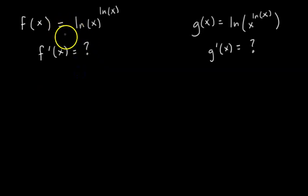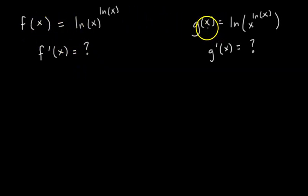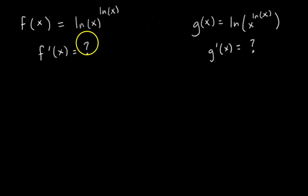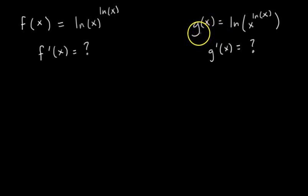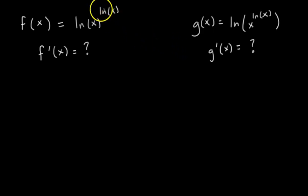All right folks, so we have these two functions, f of x and g of x, and our challenge is that we have to find their derivatives. Looking at f of x and g of x, you might notice that they're pretty similar, and the only difference between f of x and g of x is where this exponent is placed.